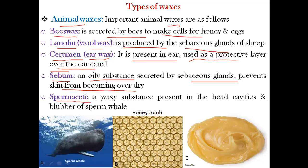Another animal wax is spermaceti, a waxy substance present in the head cavity and blubber of sperm whales. This is also a very important type of animal wax.